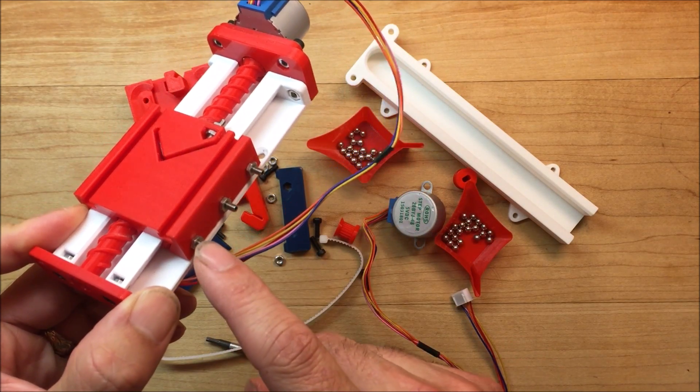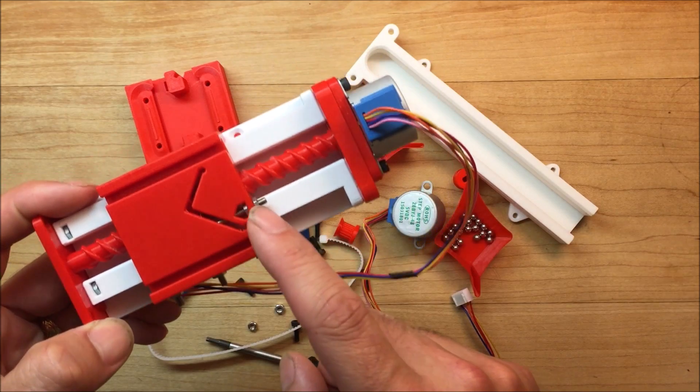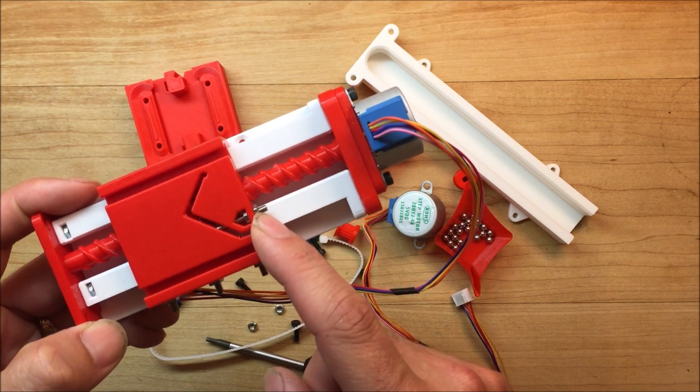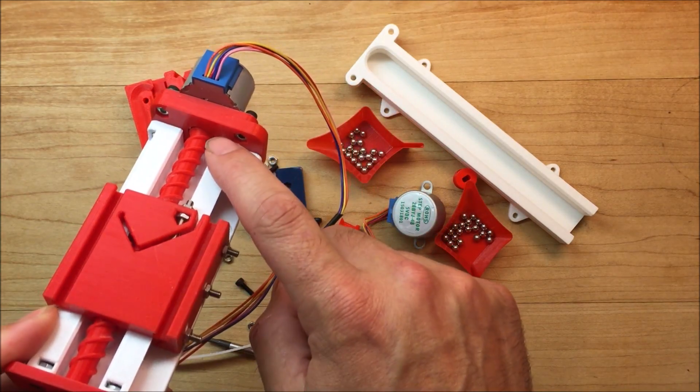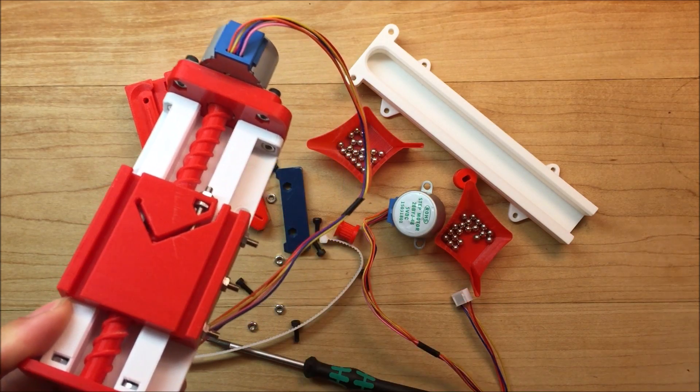It's got screws for adjusting the clearance for the gib and also a screw for adjusting backlash on the nut. It uses BBs for a thrust washer for the trapezoidal screw.